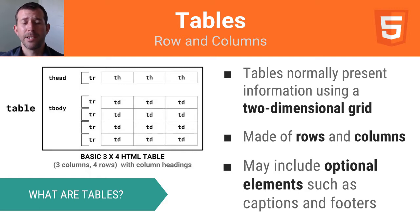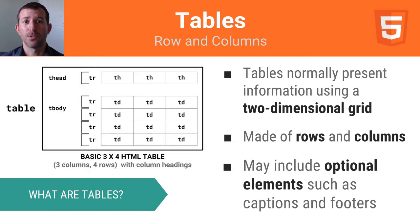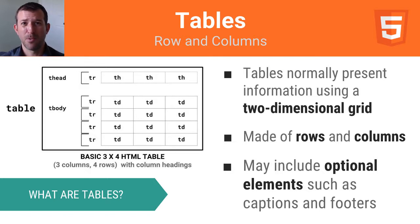Tables consist of rows and columns. You've seen many tables in your academic career. You can use HTML tables to organize data on a web page — think of a table as a two-dimensional grid made up of rows and columns. They can contain many elements, some of which are optional and allow you to do more formatting.